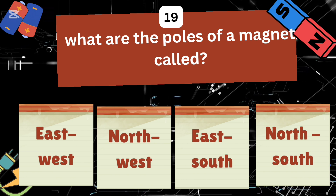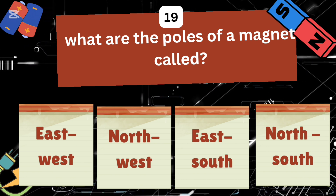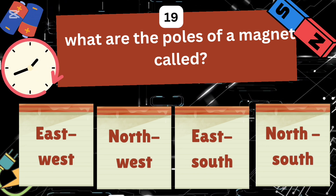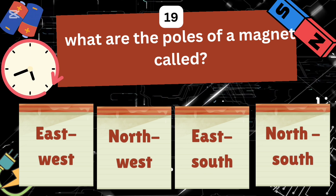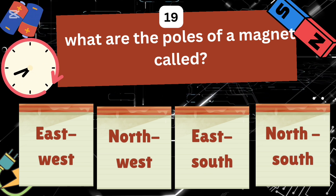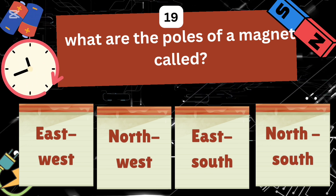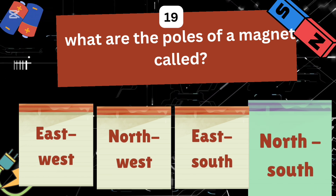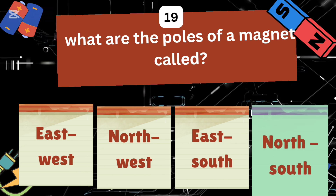The magnetism is strongest at the poles of the magnet. What are the poles of a magnet called: east-west, north-west, east-south, or north-south? North-south.